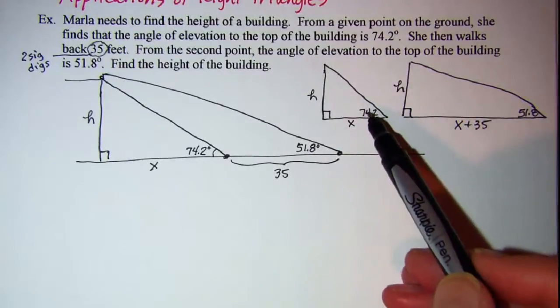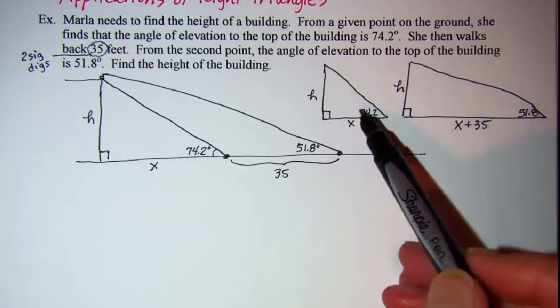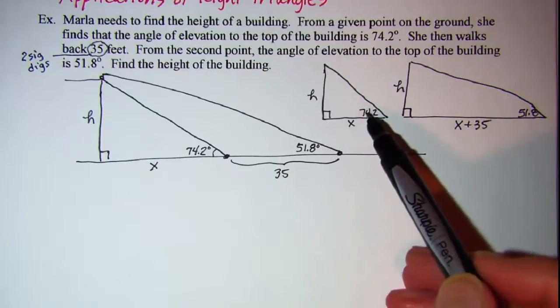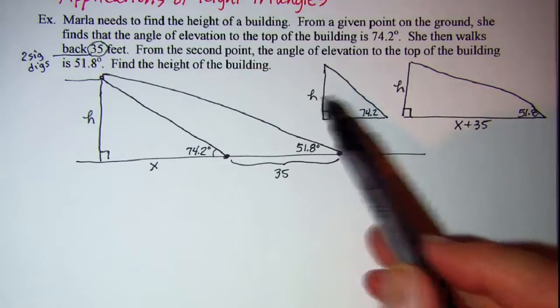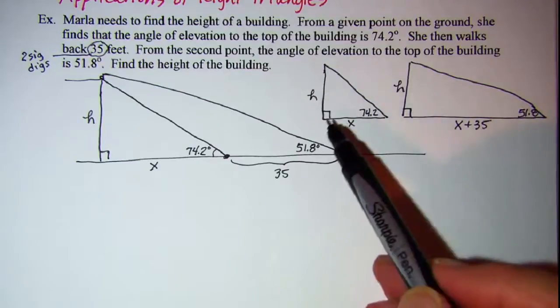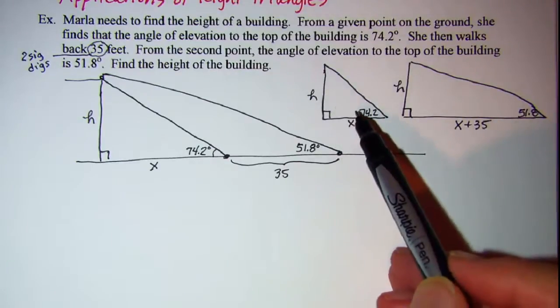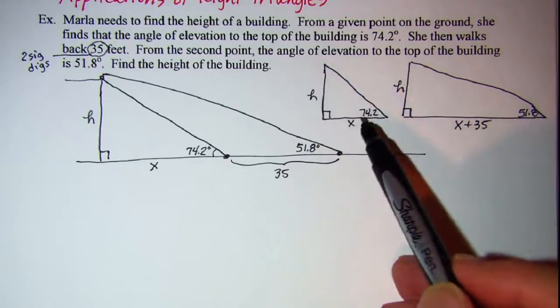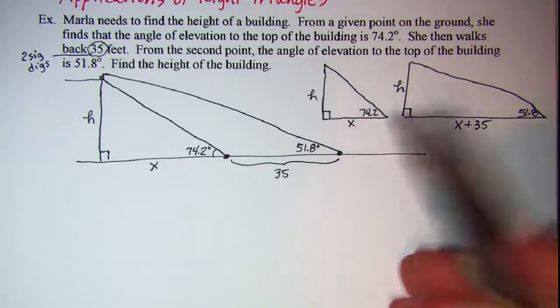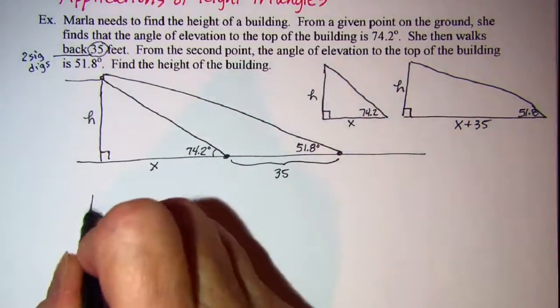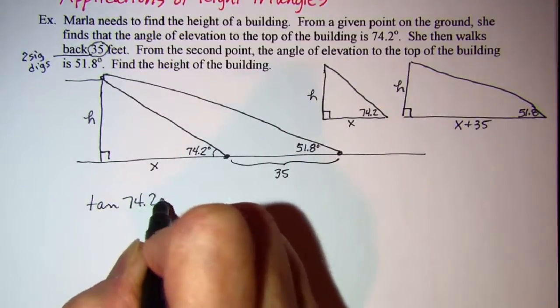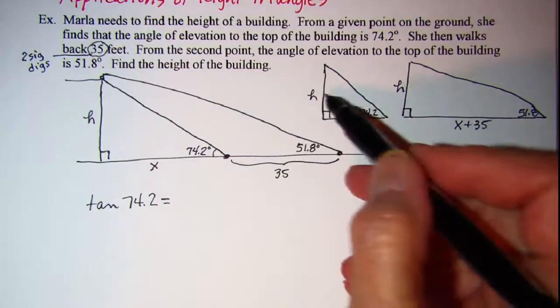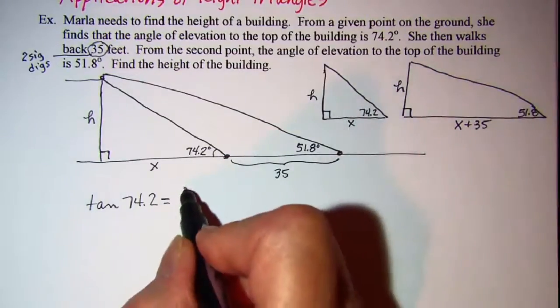Now I have opposite and adjacent so I can set up an equation. I'm going to need two equations since I have two unknowns. With this first triangle I can use tangent 74.2 equals opposite over adjacent, so H over X.